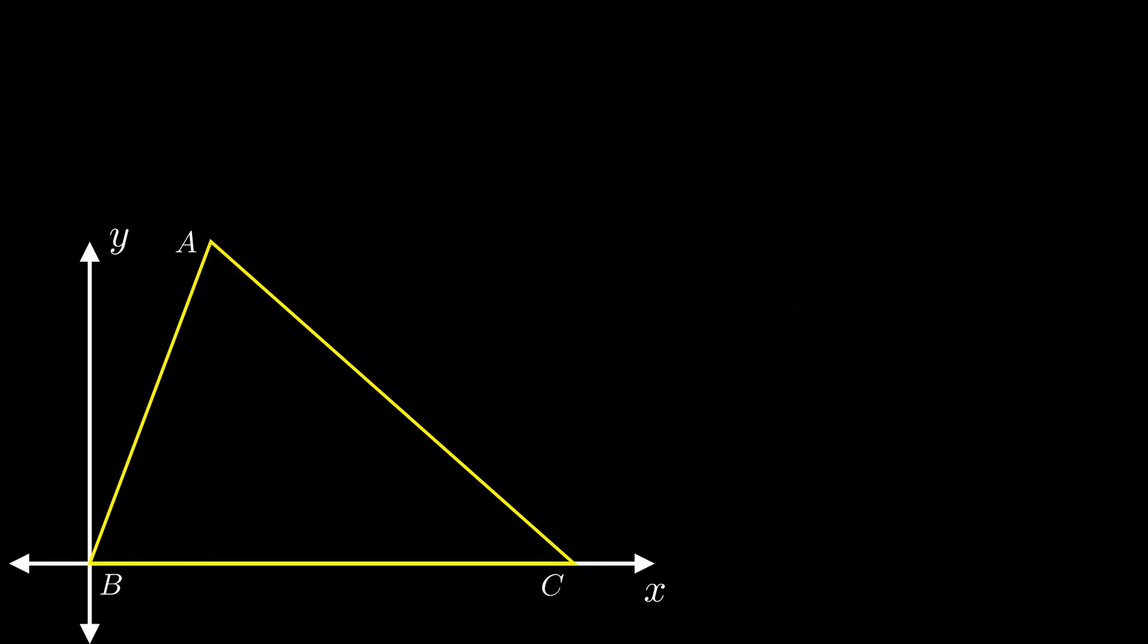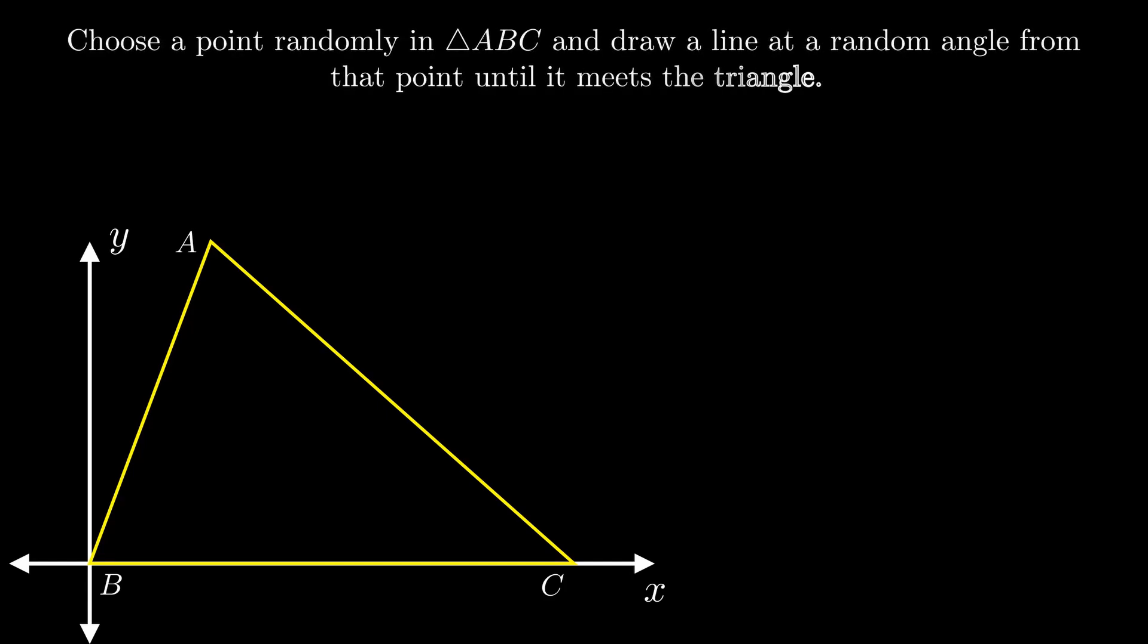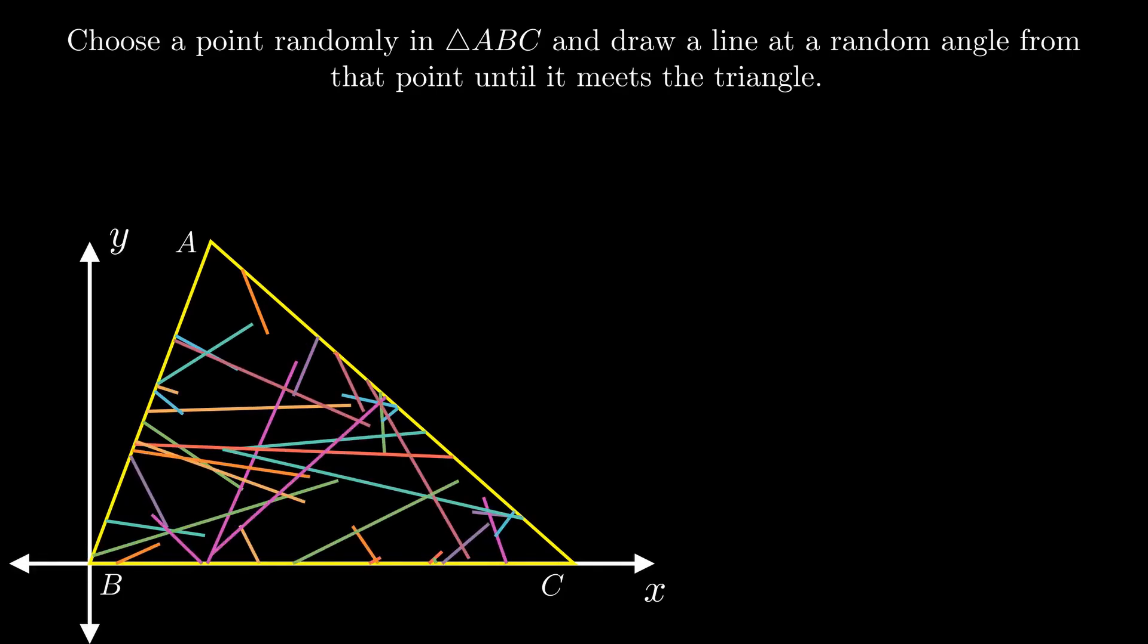We now solve the original problem. We choose a random point and draw a line from this point in a random direction until it meets the edge of the triangle. Since the line can be extended in any direction now, the angle will be uniformly distributed from 0 to 2π.